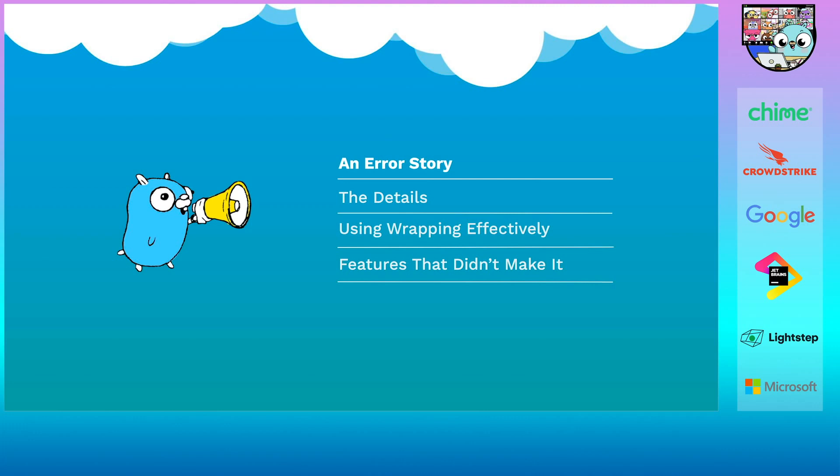Let's look at an example to see how that works. After that, I'll discuss how wrapping works in detail. Then I'll give some tips on using wrapping effectively. And lastly, I'll talk about some error features that didn't make it into Go 1.13 and how you can write your own versions of those features.